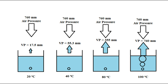At 40 degrees the vapor pressure is 55.3. The bubble inside is 55.3, but again the air pressure is so great it just smashes the bubble, so we get evaporation but we don't see any bubbles. At 80 degrees the vapor pressure is 355. The inside pressure of the bubble is 355, and again the greater outside air pressure destroys it.